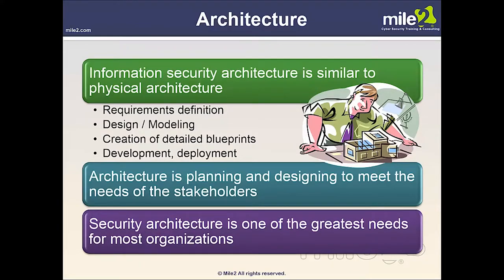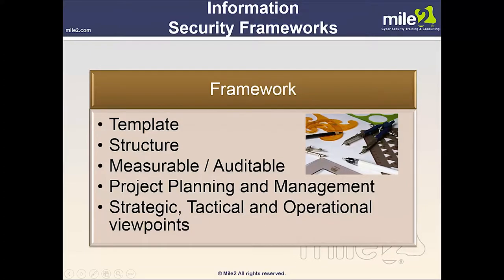Architecture: information security architecture is similar to physical architecture. We spell out the requirements, then design and model, create blueprints, develop, and finally deploy. Architecture is planning and designing to meet the needs of stakeholders. Security architecture is critically important — one of the greatest needs for most organizations. When thinking about an information security framework, we spell out a template, put together the structure, and everything must be measured and auditable. We have project planning and management.